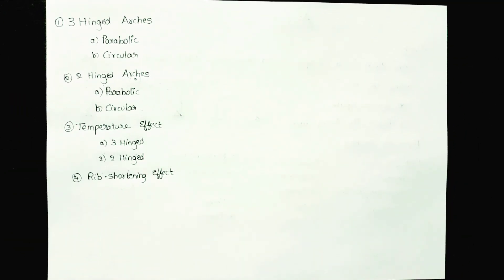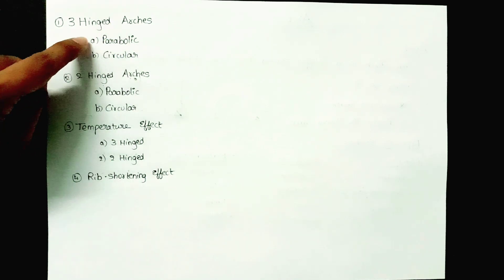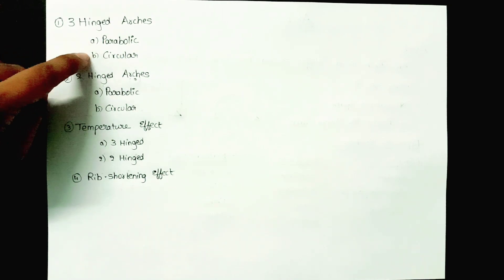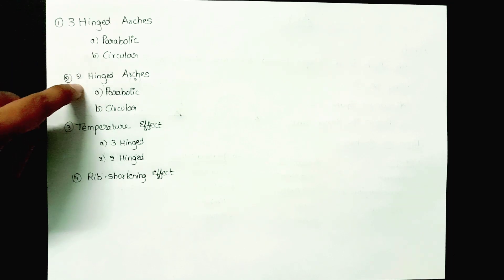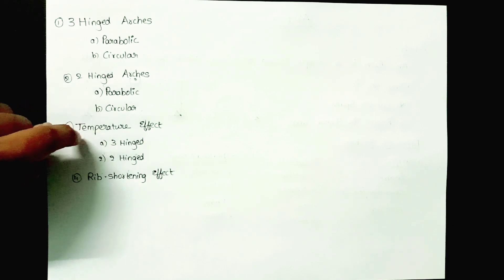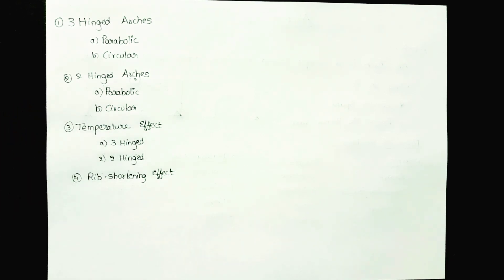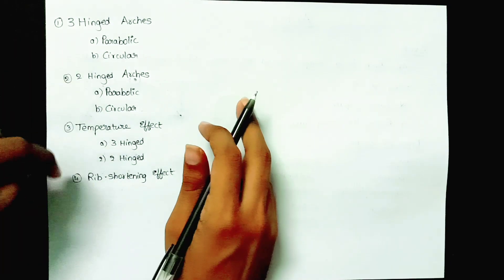In this series I am going to explain the following topics: three hinged arches — analyzing parabolic and circular arches; two hinged arches — analyzing parabolic and circular arches; temperature effects on three hinged and two hinged arches; and rib shortening effects.